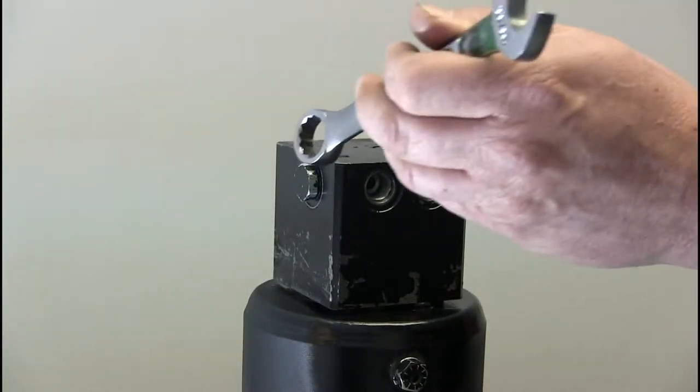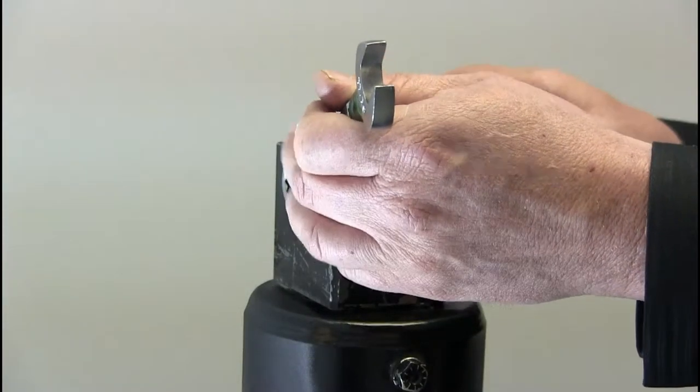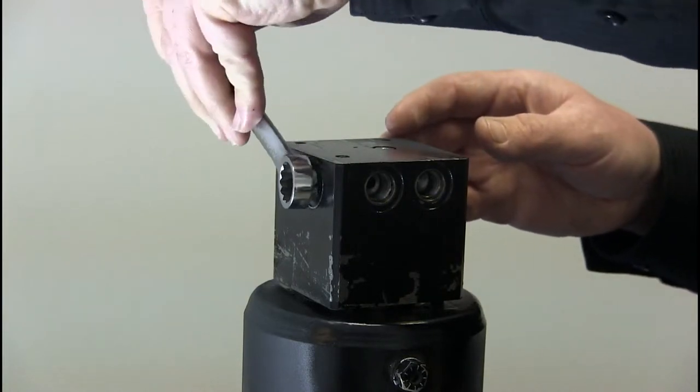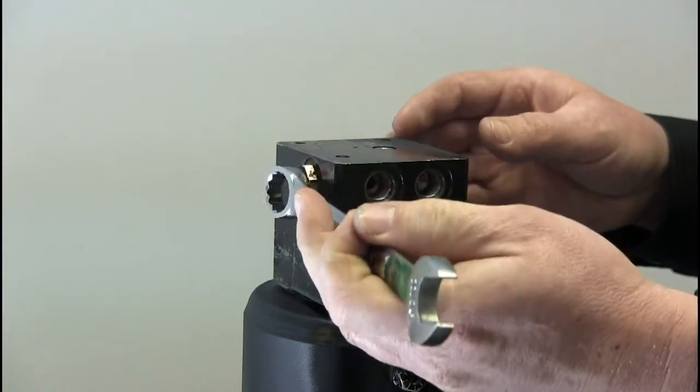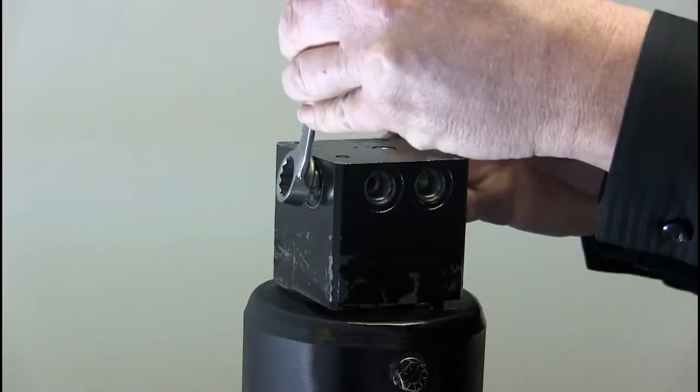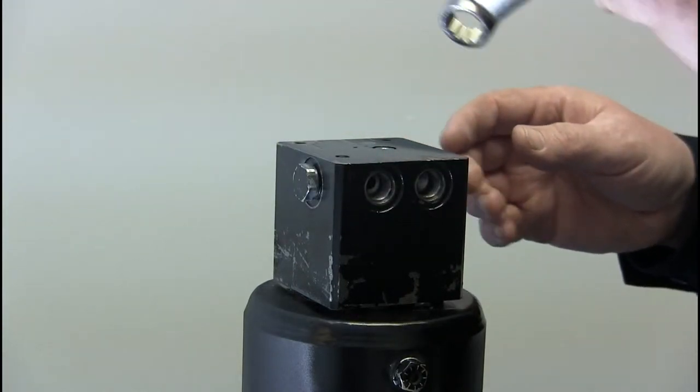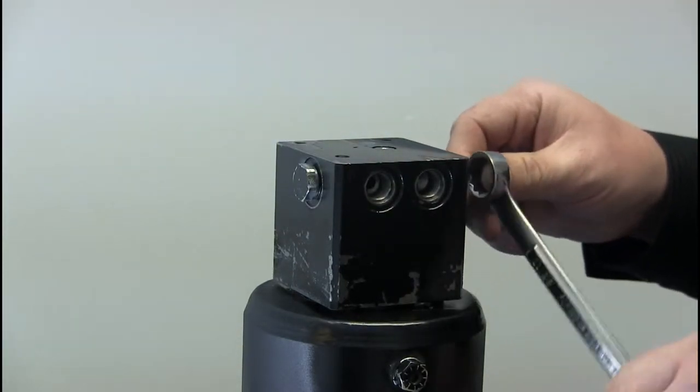Using the 11/16 combination wrench, slowly loosen each cartridge valve approximately one turn to relieve any pressure. There will be a small amount of pressure in there, so please use adequate safety precautions.